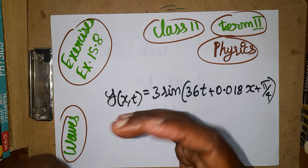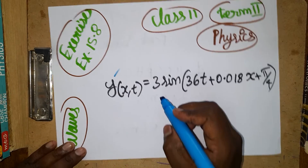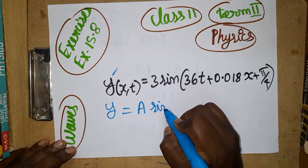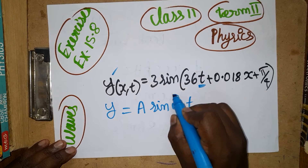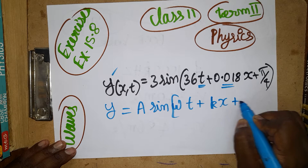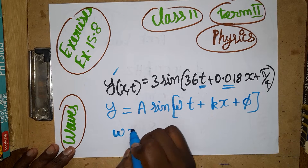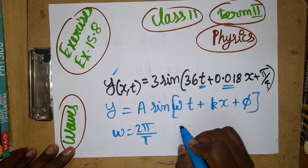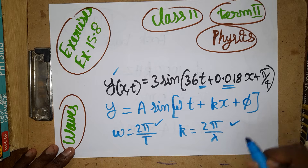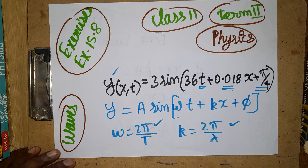From the equation, we need to know the variables. y is called displacement. The general wave equation is y = A sin(ωt + kx + φ), where A is amplitude, ω is angular frequency equal to 2π/T, k is the wave number equal to 2π/λ, and φ is the phase constant or phase difference.